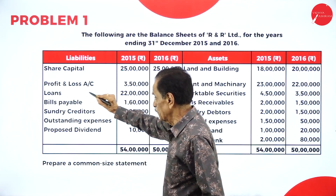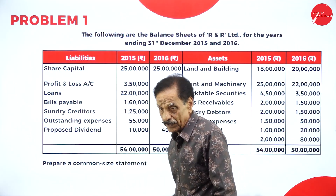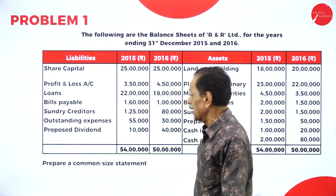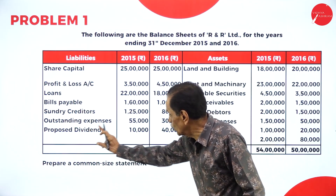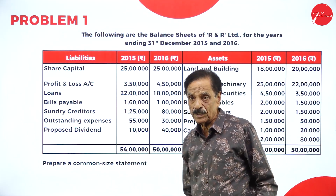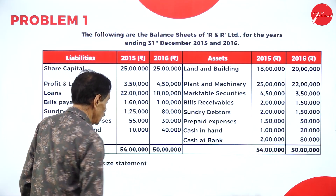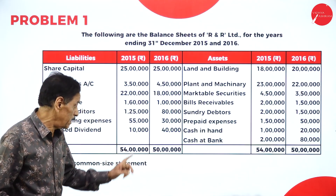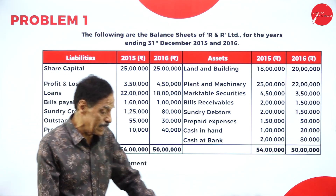Share capital and profit come to the shareholders' fund. Loans are separated — you have taken the loan. Current liabilities include BP, creditors, outstanding expenses, and proposed dividend. In preparing the Common Size Statement, you put 54 lakh as 100% and 50 lakh as 100%, then take out the percentage for each item.